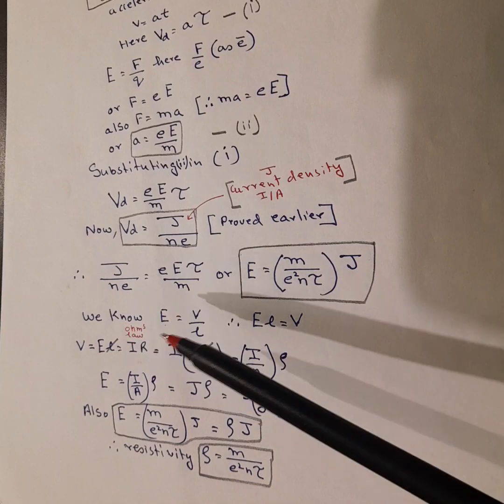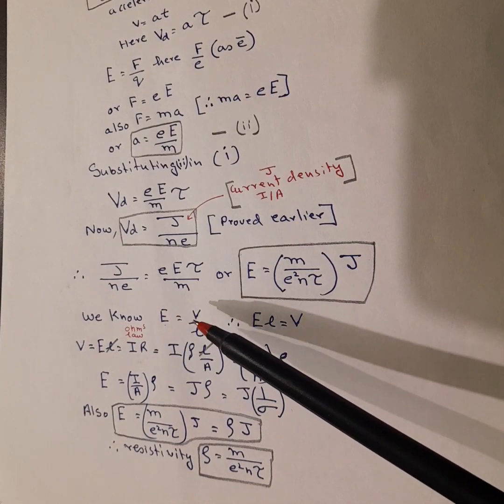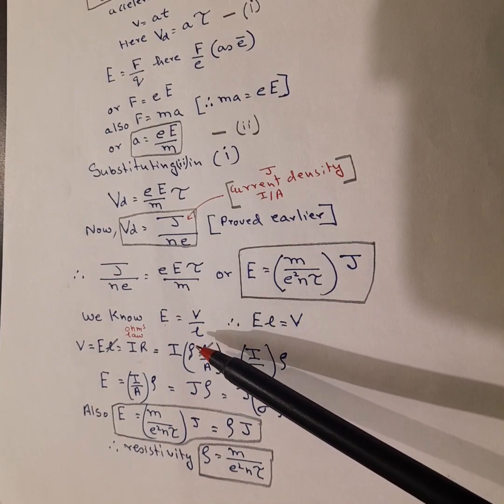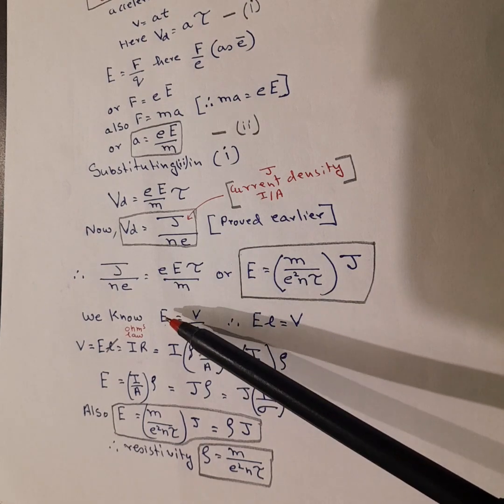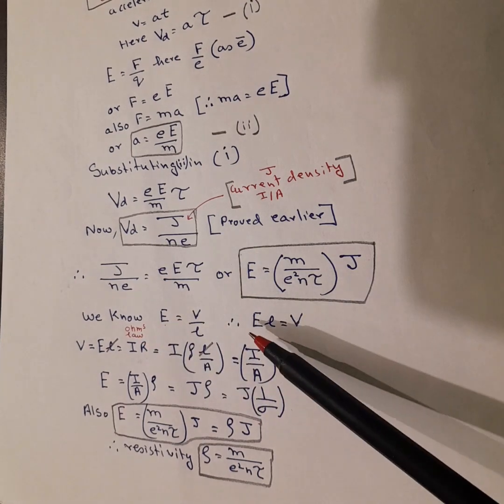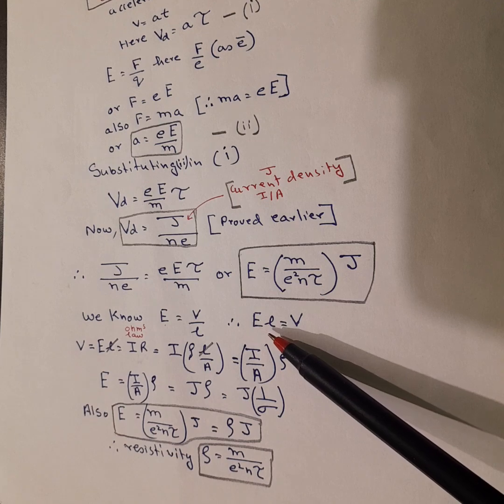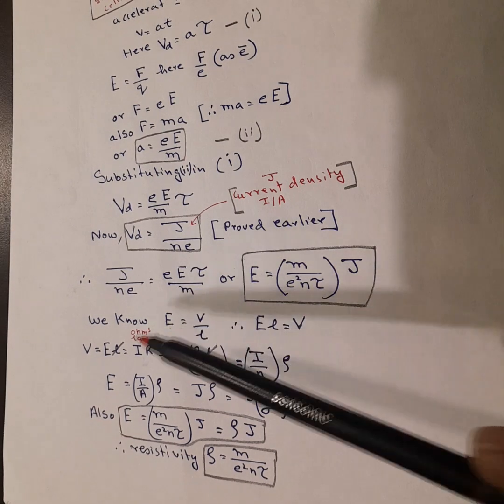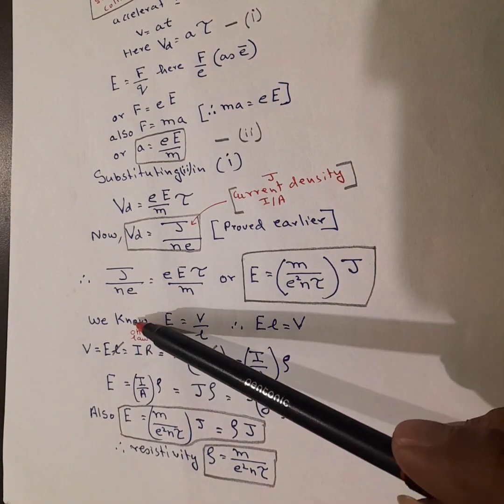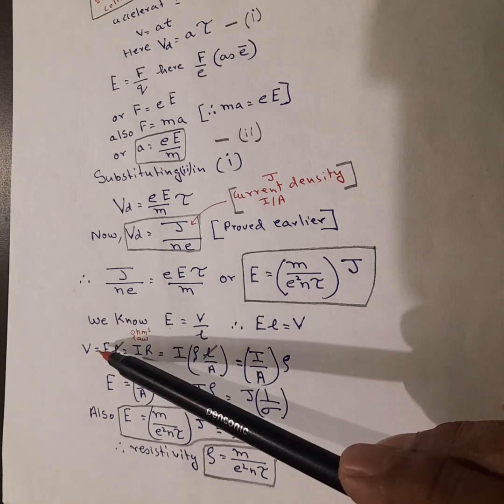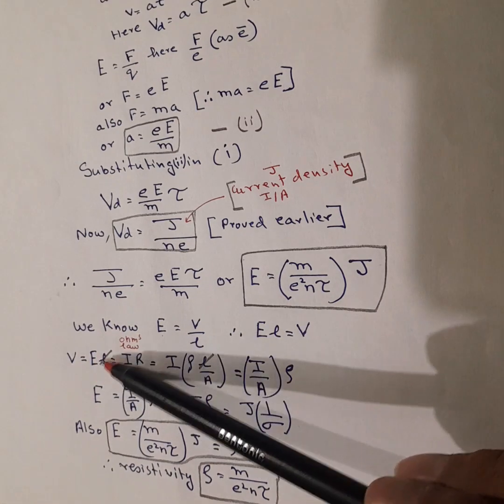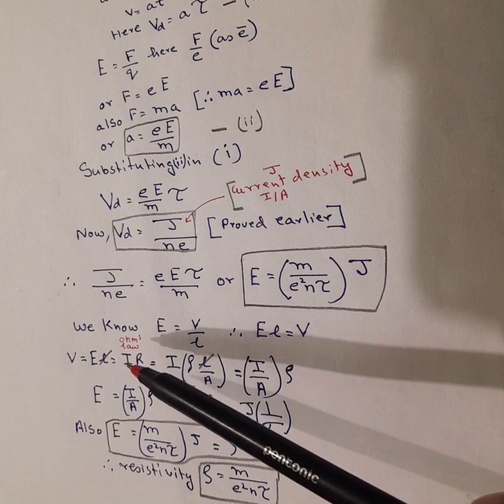Now we also know the formula E is equal to V over L. So obviously, if I take L that side, V is equal to E into L. And V also is equal to IR as per Ohm's law. So when we equilibrate, we end up with this.